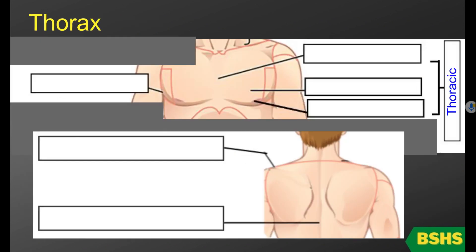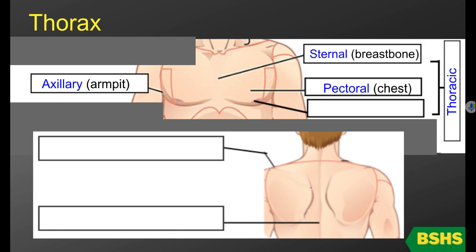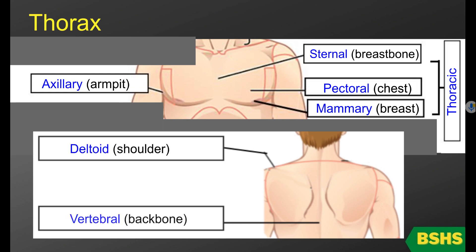Now let's talk about the regions of the thorax. On the anterior side, you have the axillary — that's the armpit. Sternal is the breastbone. Pectoral is the chest. Mammary is the breast. On the posterior side, you have the deltoid — that's the shoulder. And vertebral is the backbone.